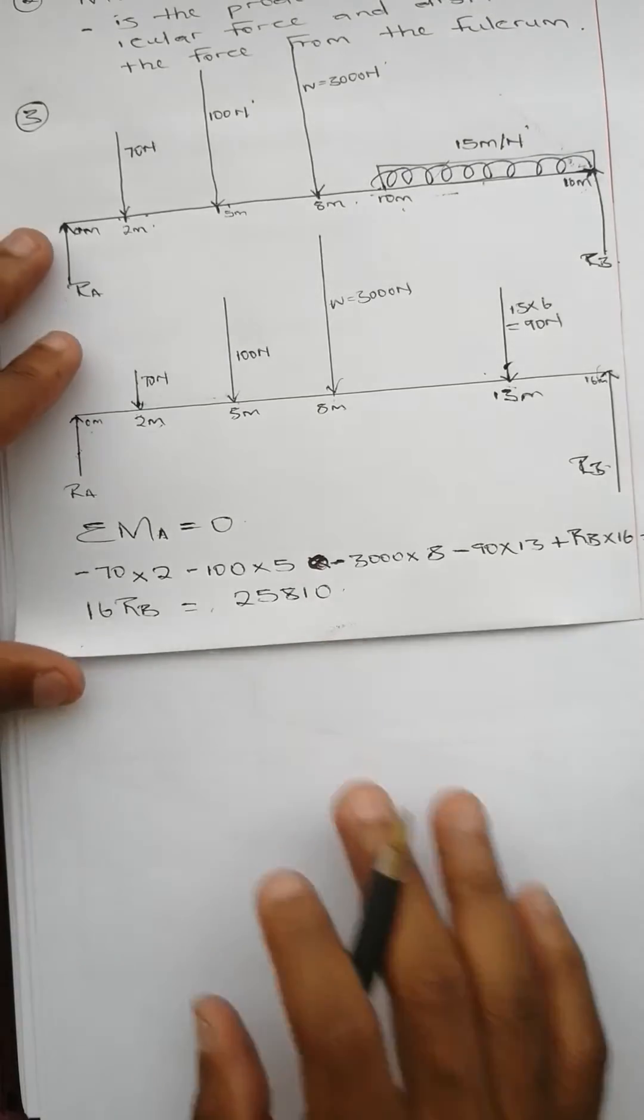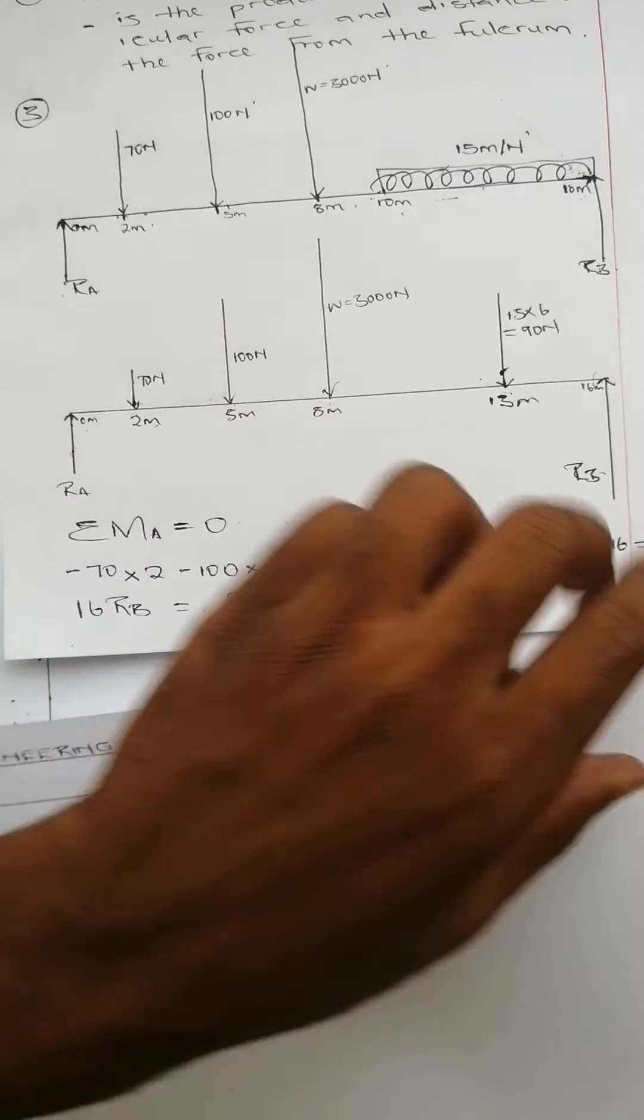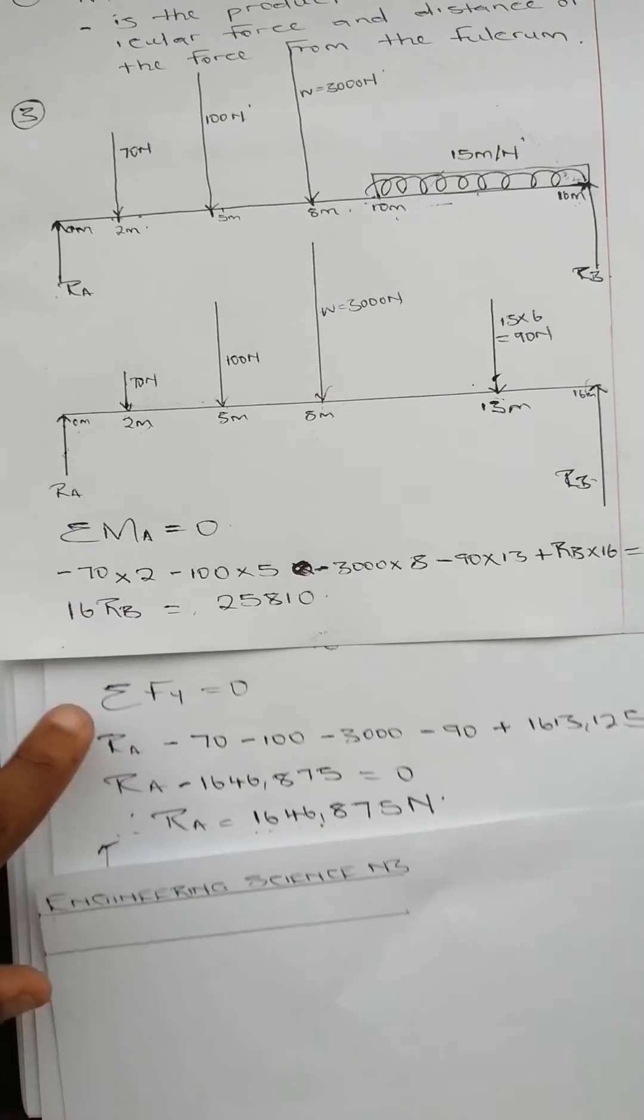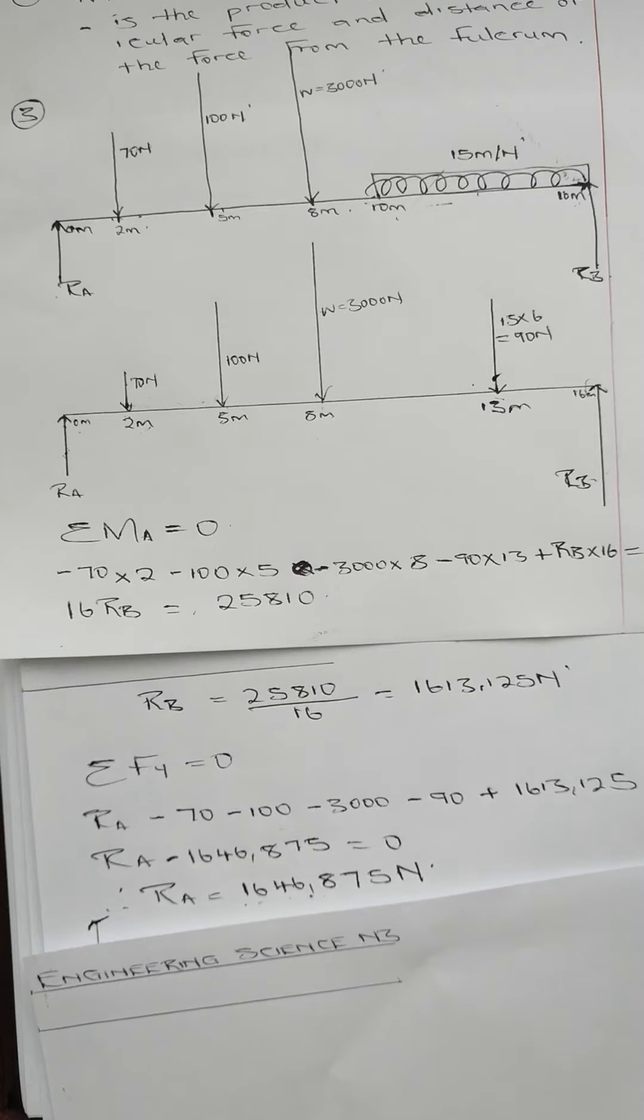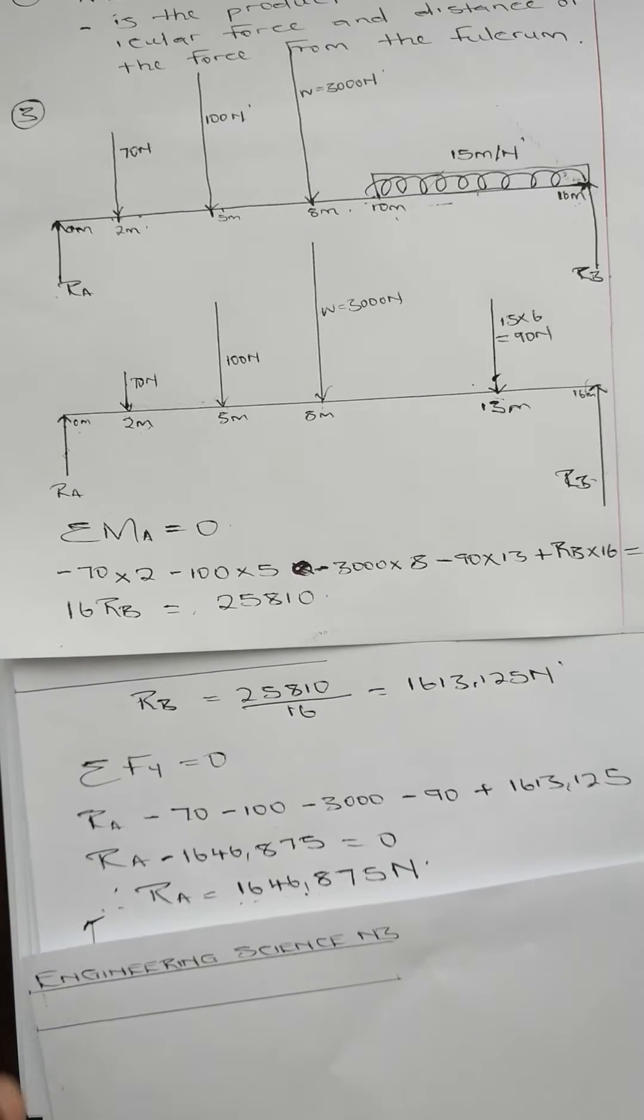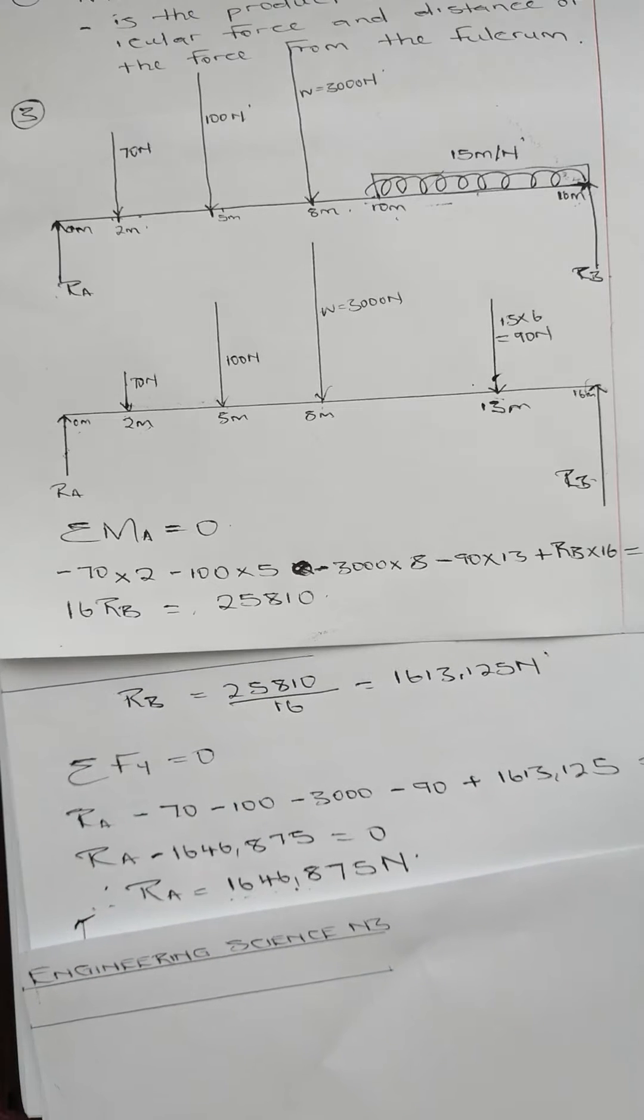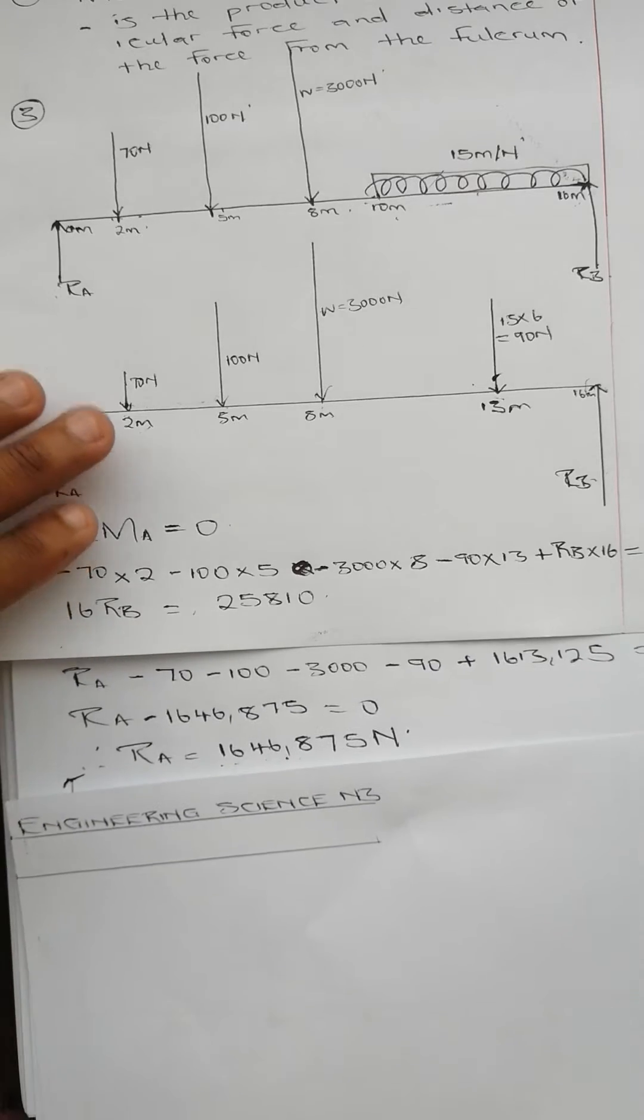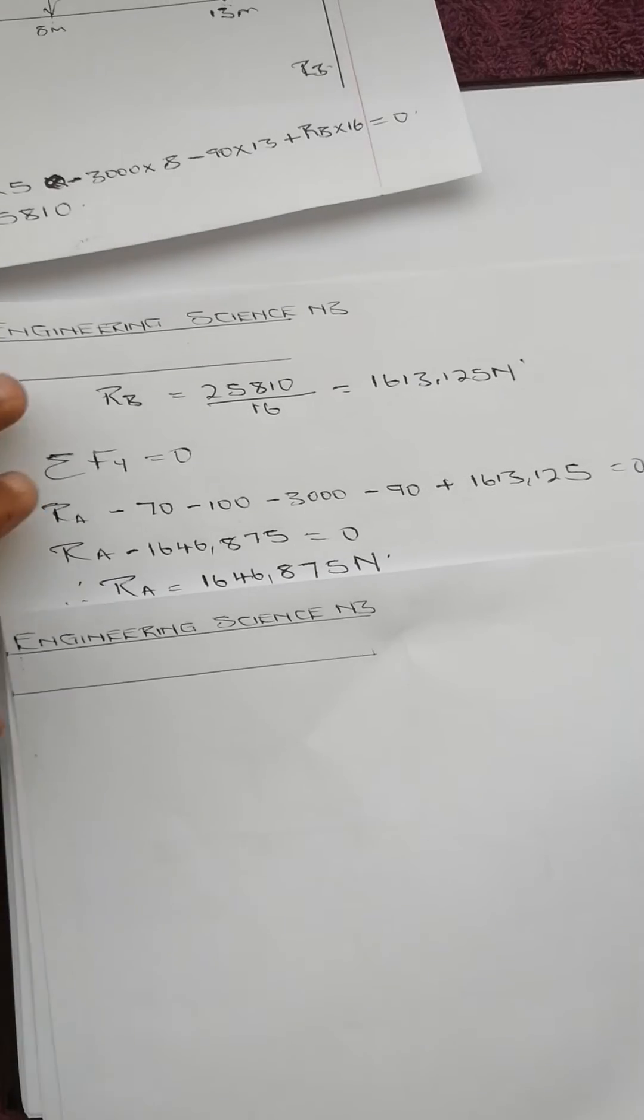After calculating all the reactions, we got reaction B as 1613.125 and reaction A as 1646.875.